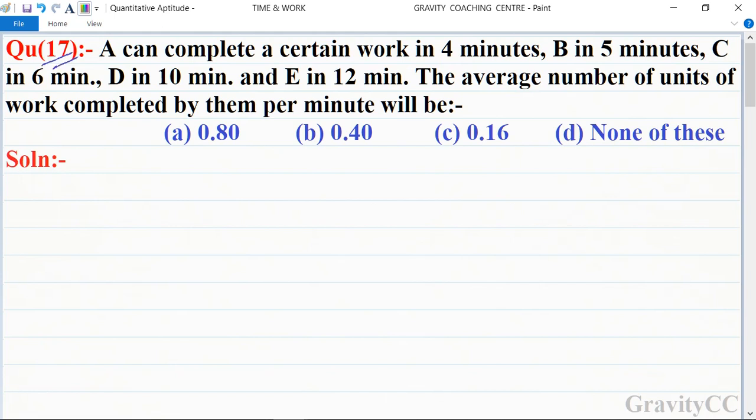A can complete a certain work in 4 minutes, B in 5 minutes, C in 6 minutes, D in 10 minutes and E in 12 minutes. So the average number of units of work completed by them per minute will be: